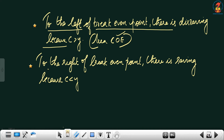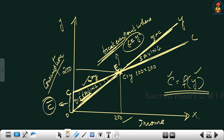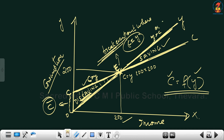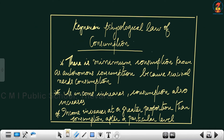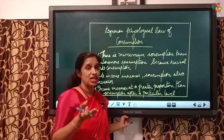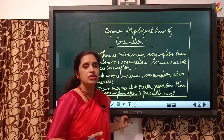Observation five: to the right of the break-even point, there is savings because C is less than Y, or Y is greater than C. To the right of the equilibrium point, savings are present. So the observations of the consumption curve are: it slopes upwards, starts from the Y-axis, to the left of the break-even point there is dissaving, and to the right of the break-even point there is savings.